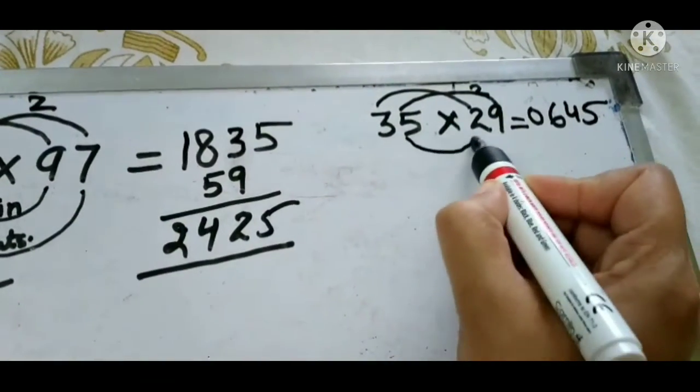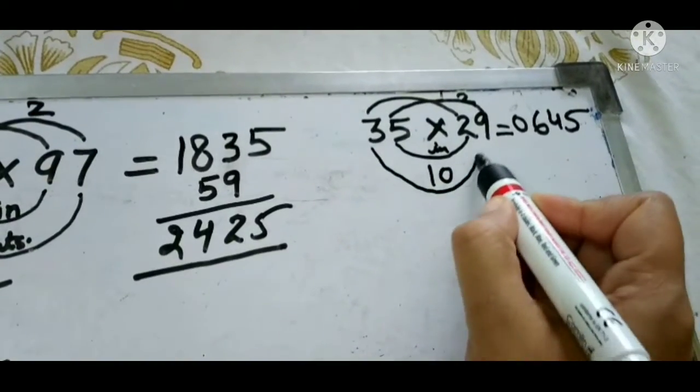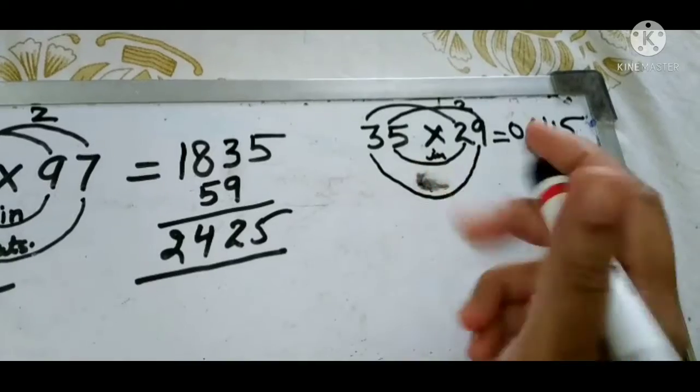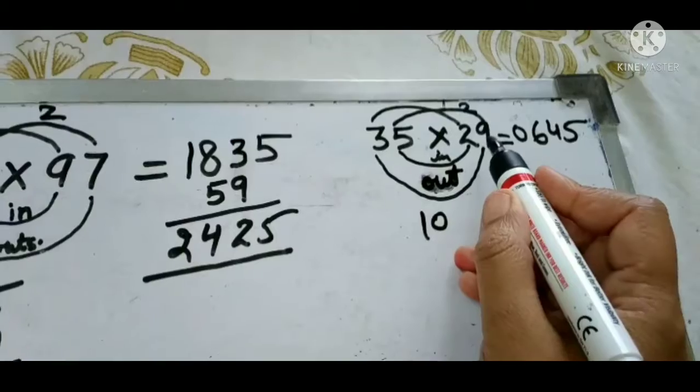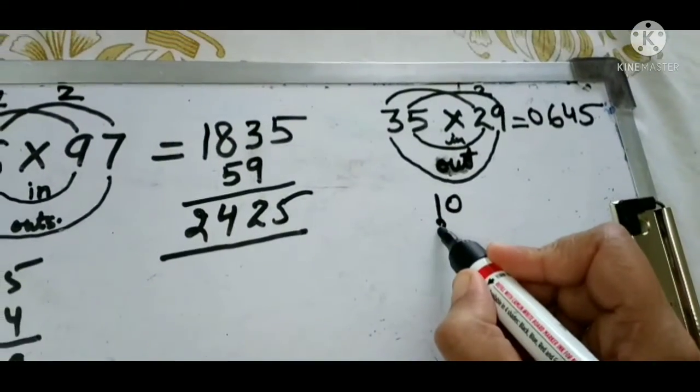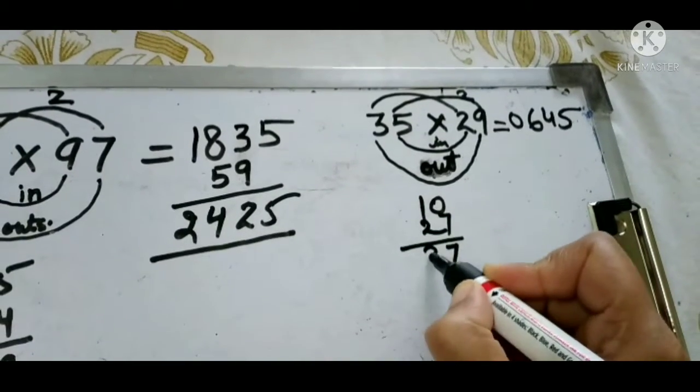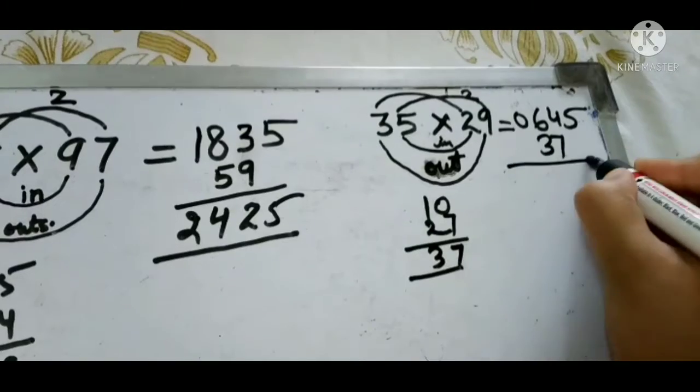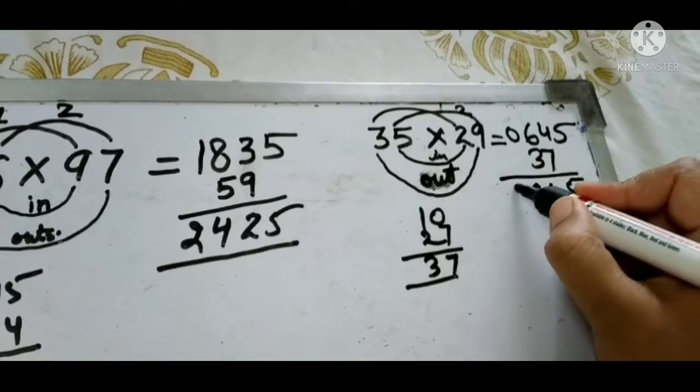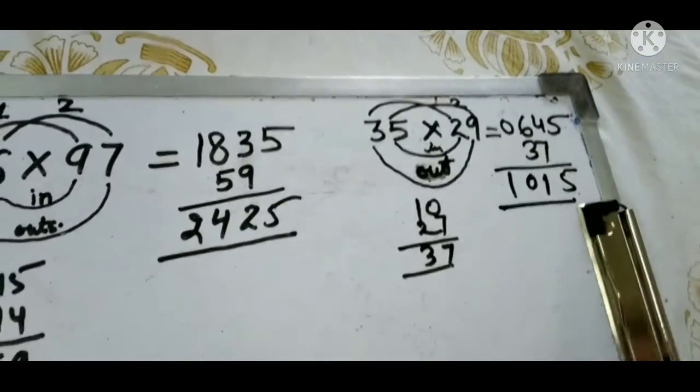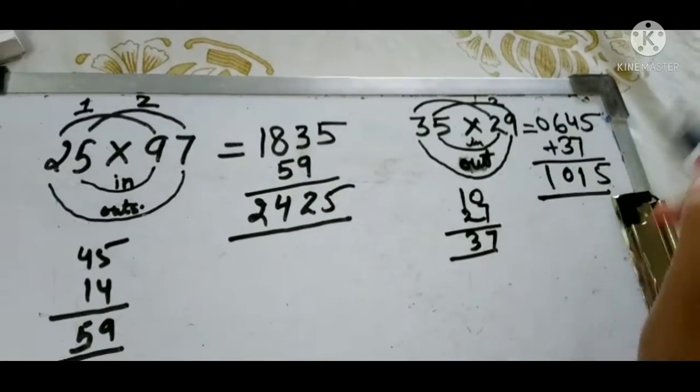And then what we do: inside in, what is inside? 5×2 is 10. And out, what we take out? We write out 10. And 9×3 is 27, so 7 and 3, 37 we add. 37, 5, and this is your answer.